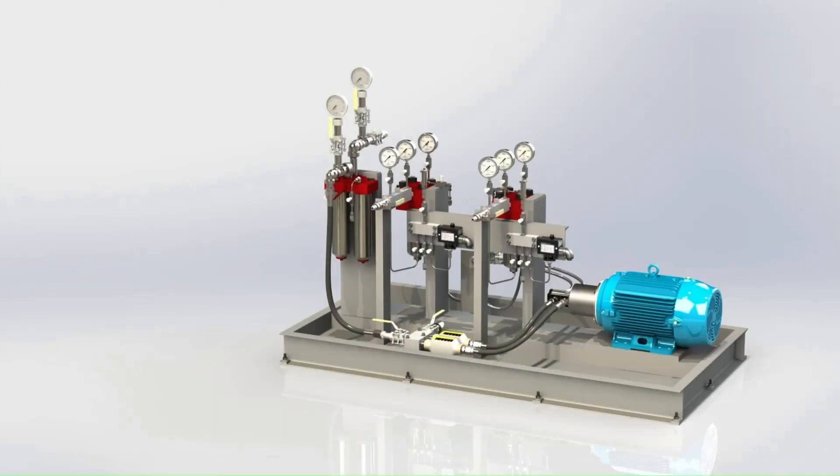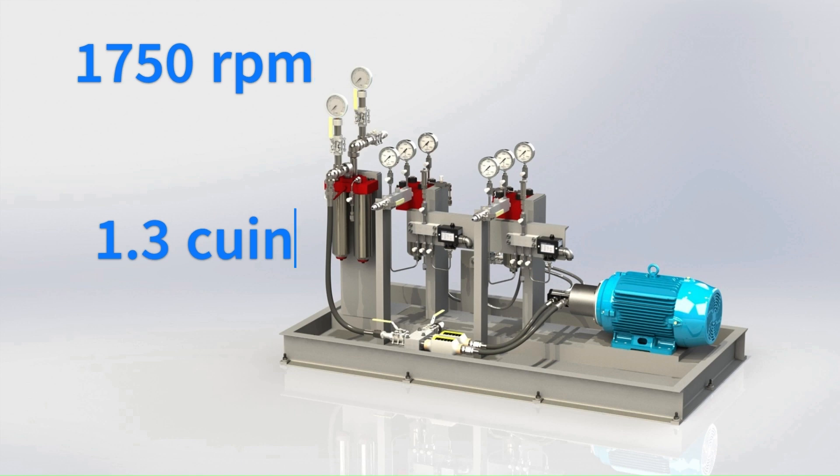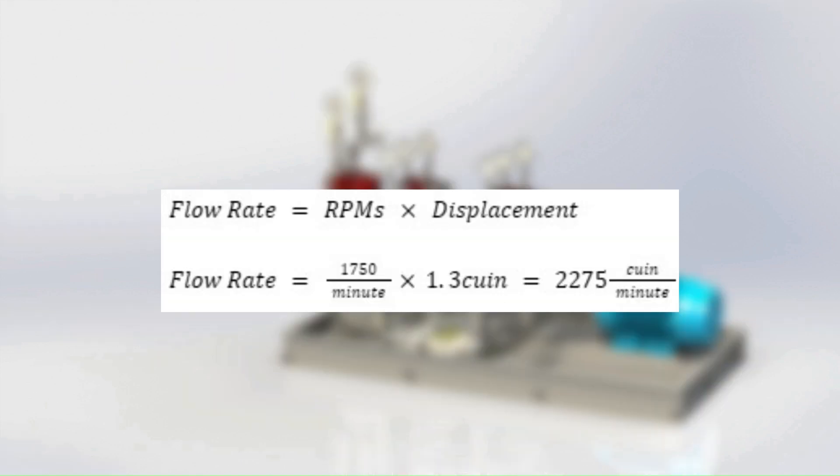Now let's look at an example. Let's assume we will be using a motor that will operate at 1750 RPM and a pump with a displacement of 1.3 cubic inches. We multiply these together to get a volume measured in cubic inches per minute.